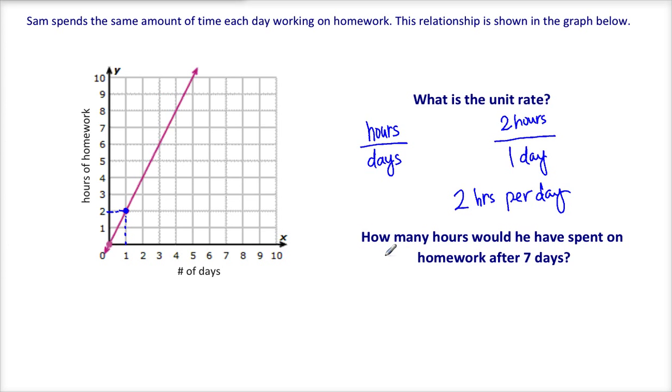The next question says how many hours would he have spent on homework after seven days? Now we could use the same method, go over and find seven days and then follow it up to the line. But notice that my line doesn't cross seven days, so I can't use the graph for this question.